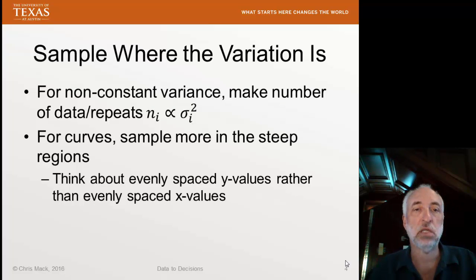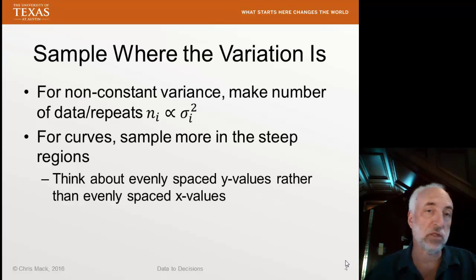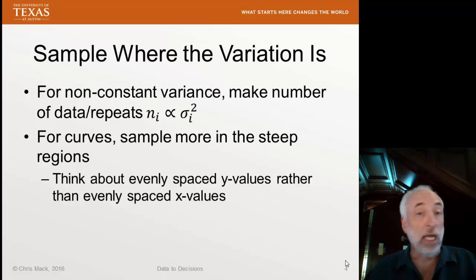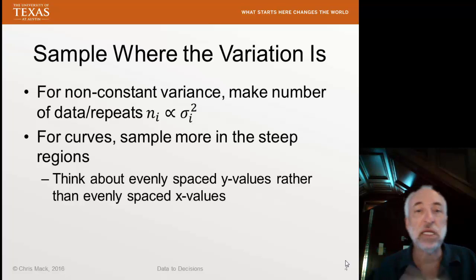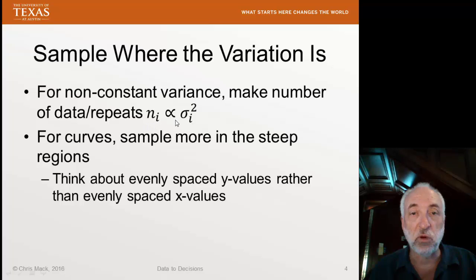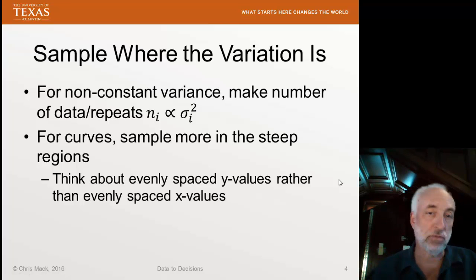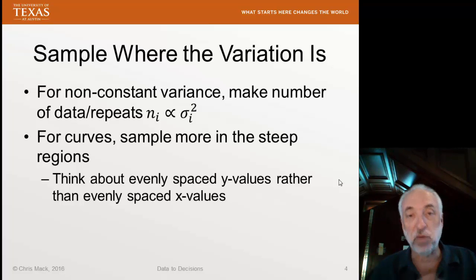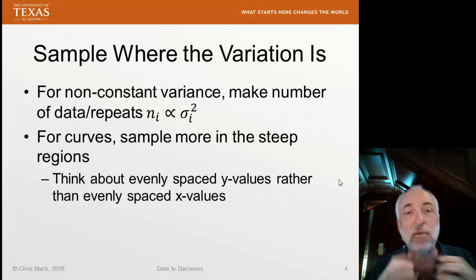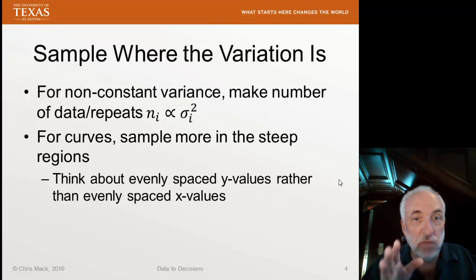Another principle of regression design is to sample where the variation is. Sometimes we know that we don't have a constant variance throughout our entire experimental space. There might be some region where the variance is higher — the uncertainty, the errors in our process are larger. In that region, we want to increase the density of the data, either by squeezing together the distance between X points in that design space, or by adding more repeat measurements in that region. We would love the number of data points in that region to be proportional to the variance in that region, and in that way equalize the effect on our regression. Also, if we have a response that is nonlinearly related to the inputs, then we want to sample more in the steep regions — you can think about evenly spacing the Y values rather than evenly spacing the X values.